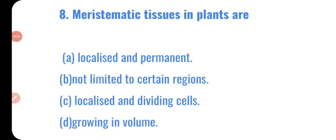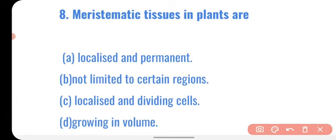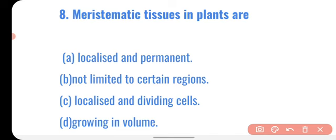Question number eight: meristematic tissues in plants are — which option is correct? In plants there are two kinds of tissues: meristematic and permanent. Meristematic tissues are localized and dividing cells — they are located at certain places and have the capacity for cell division. So the correct answer is localized and dividing cells.